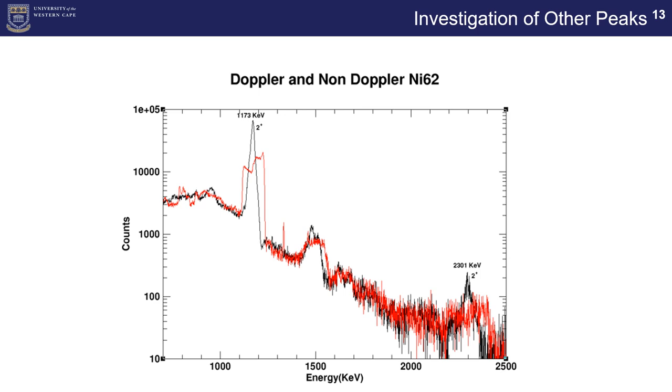All right, so following after that, we then had to look at any of the other peaks that perhaps present themselves in the nickel 62 data. As you can see, we find that there is another peak for nickel 62, particularly the second 2 plus state of 2301 keV. We are still currently looking for any other peaks that perhaps show themselves. We can perhaps see a few referenced in the current spectra, but we haven't definitely understood a few of their peaks, so that's what we're still looking into.